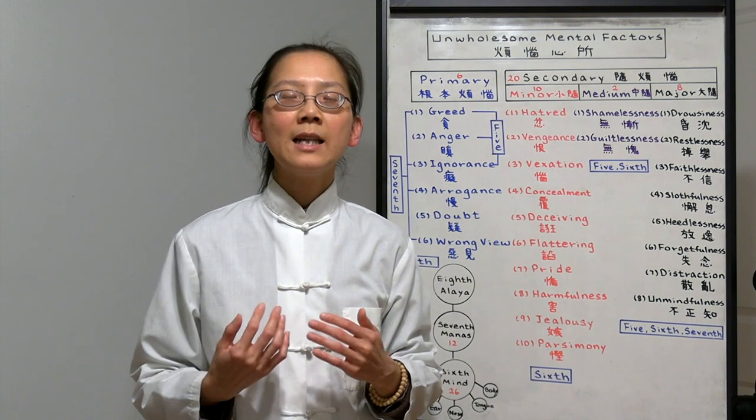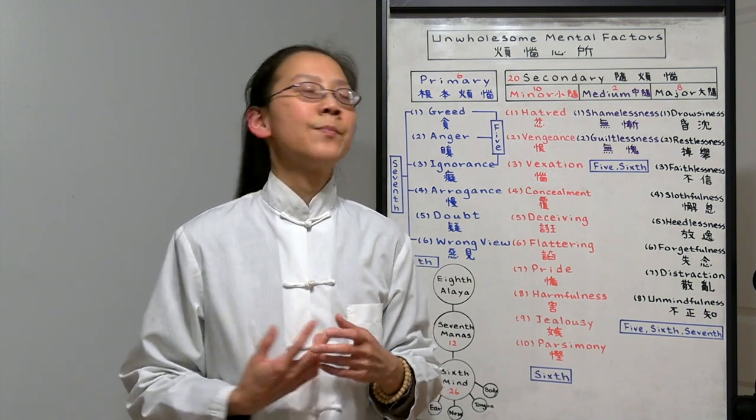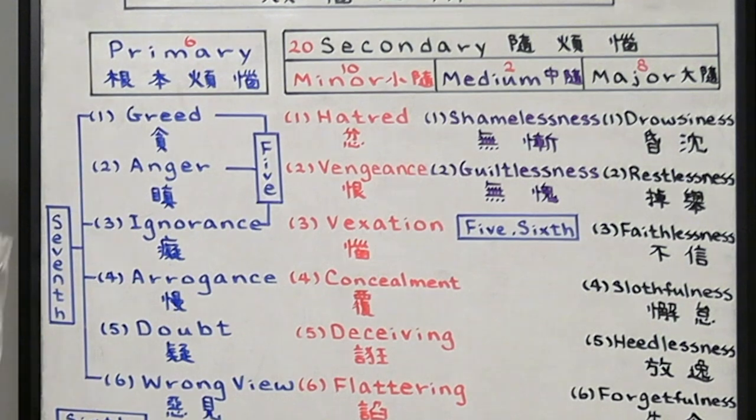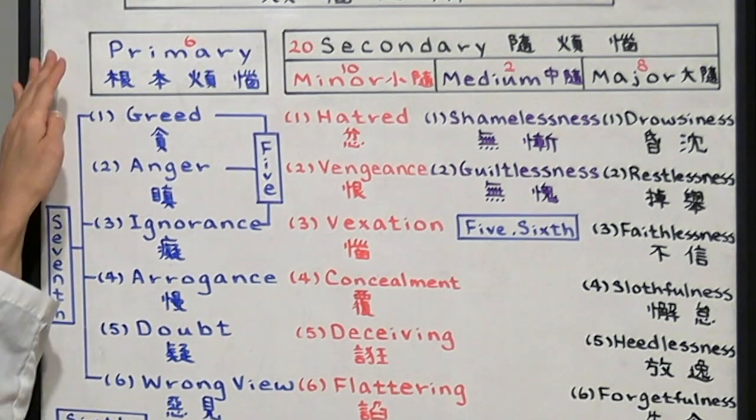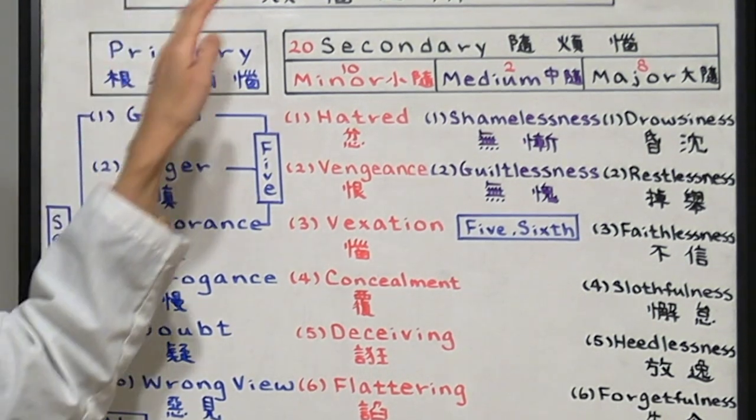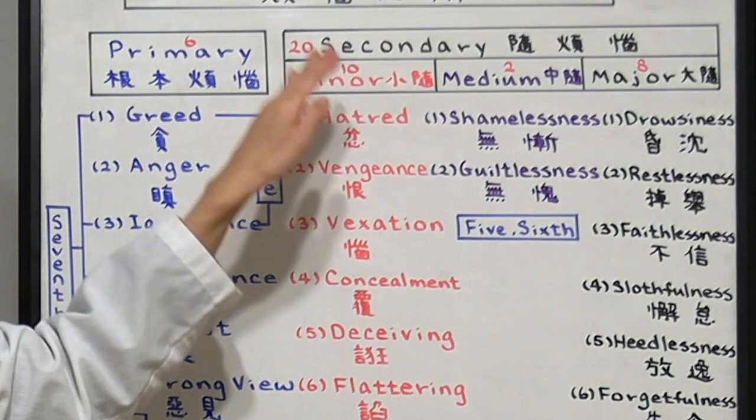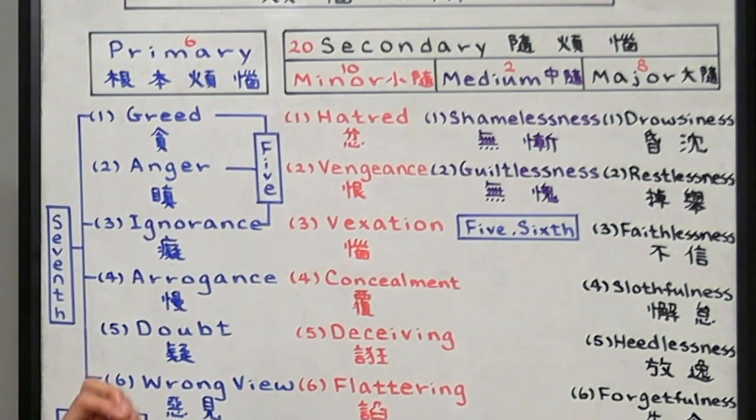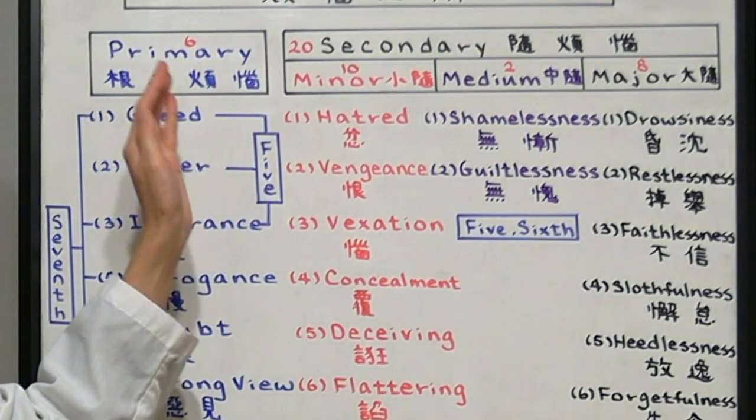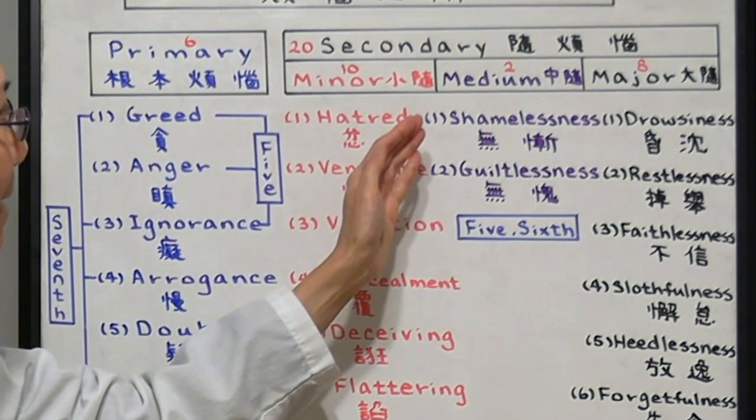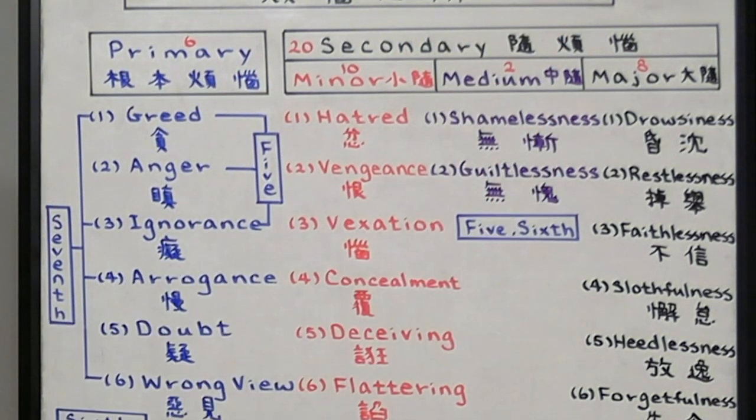Hopefully it will help us eradicate our afflictions. The 26 consists of 6 primary unwholesome mental factors and 20 secondary unwholesome mental factors. Out of the 20, it's divided into 10 minor, 2 median and 8 major. Let's first look at the 6 primary unwholesome mental factors.